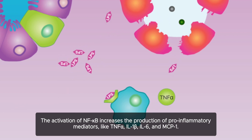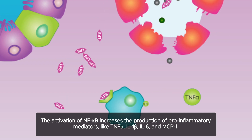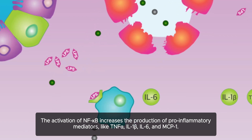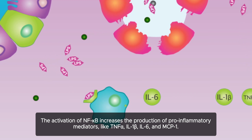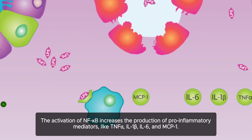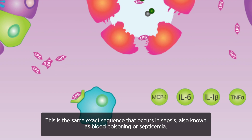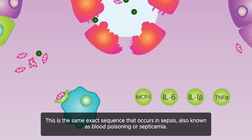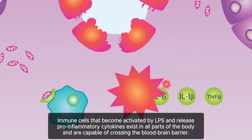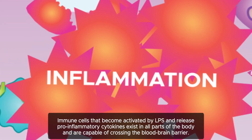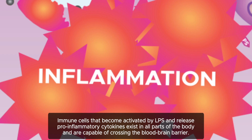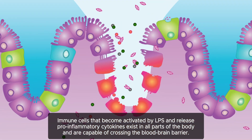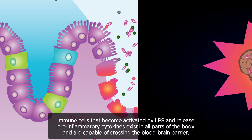The activation of NF-kappa B increases the production of pro-inflammatory mediators like TNF-alpha, interleukin-1-beta, interleukin-6, and MCP-1. This is the same exact sequence that occurs in sepsis, also known as blood poisoning or septicemia. Immune cells activated by LPS that release pro-inflammatory cytokines exist in all parts of the body and are capable of crossing the blood-brain barrier.